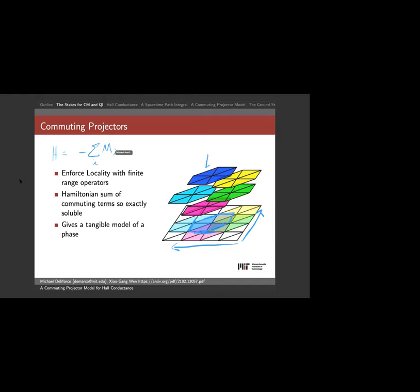I require that the local operators commute, so if I can solve one I can solve all of them. Additionally I ask that they're all projectors — they square to themselves — because that makes it easy to solve one. With that, I have a tangible model of a phase: I can get the ground state and do the whole calculation. That's what we're after today.